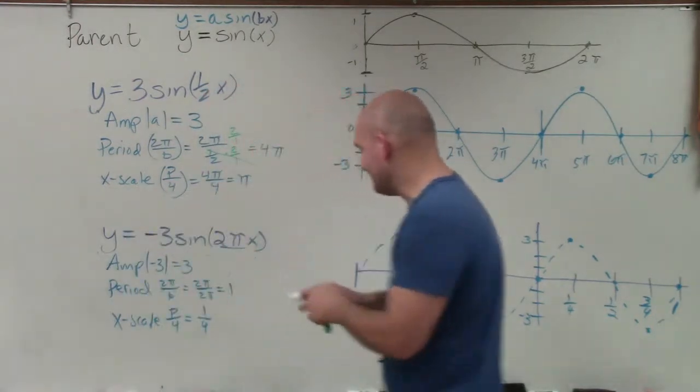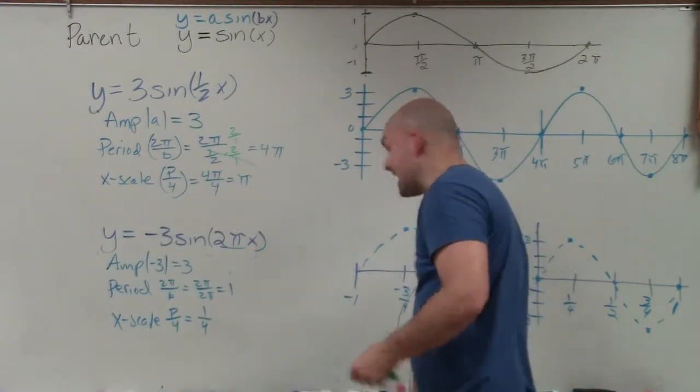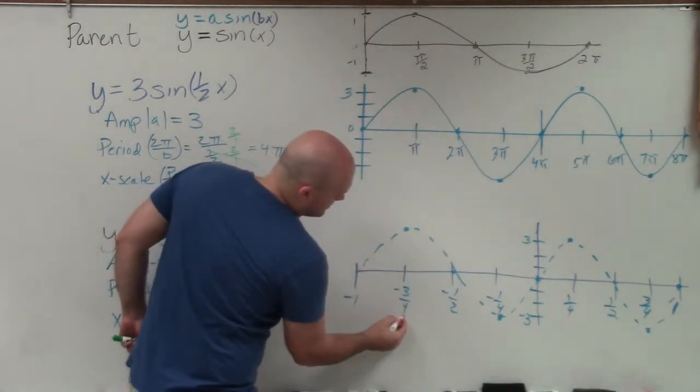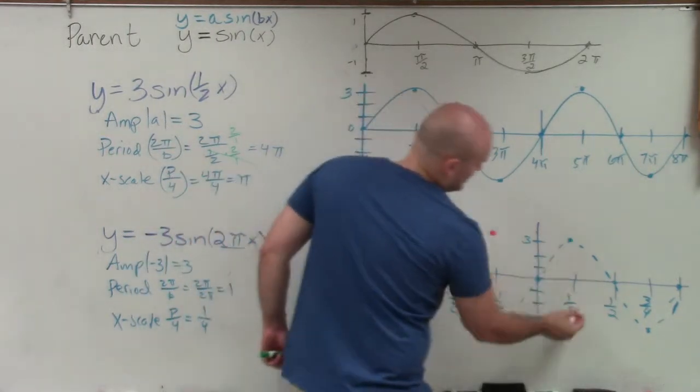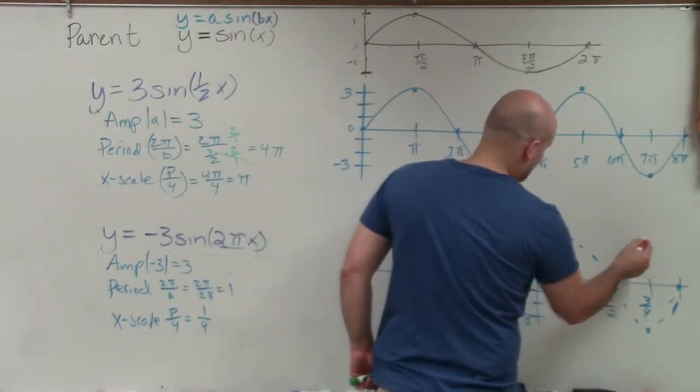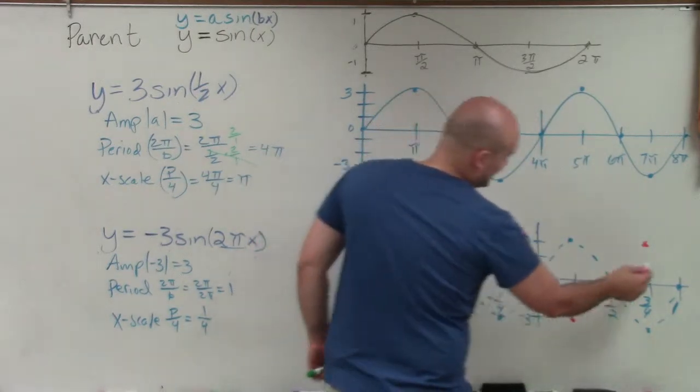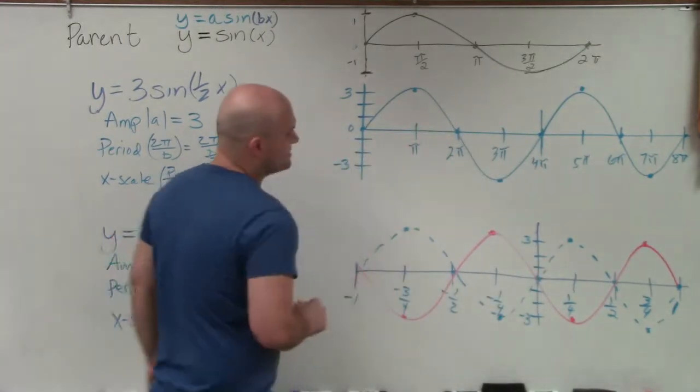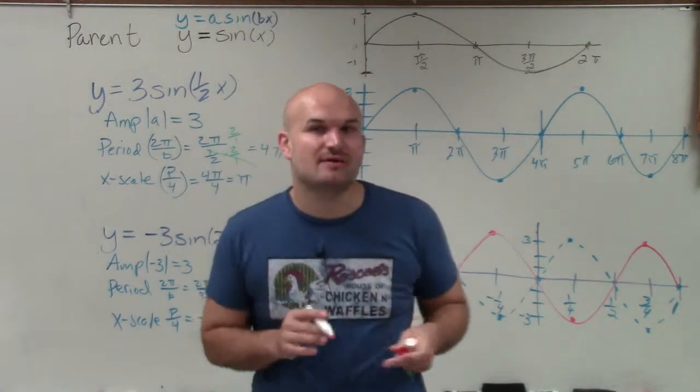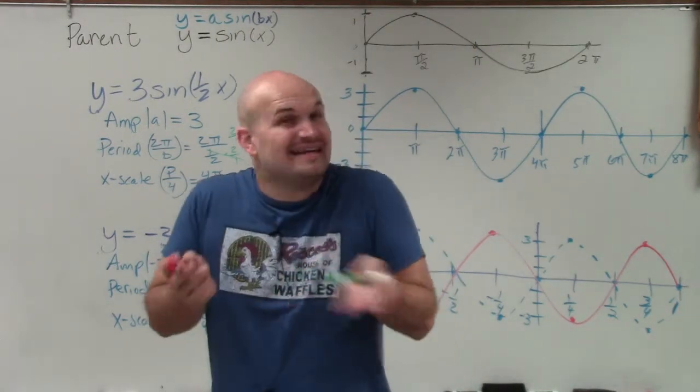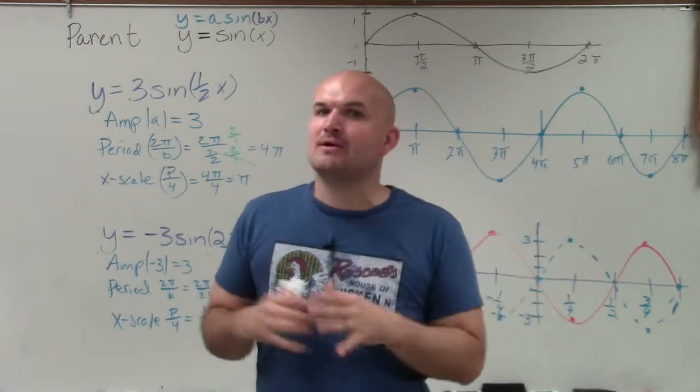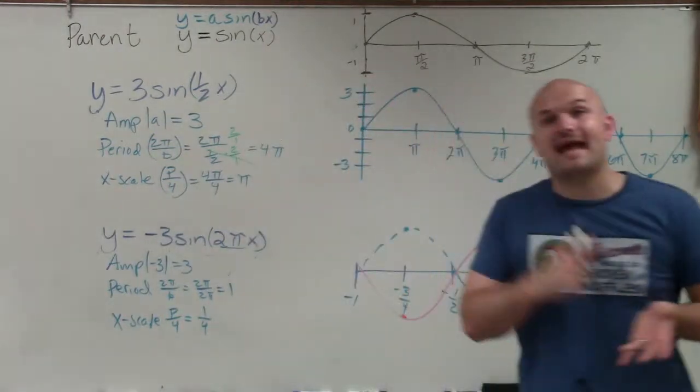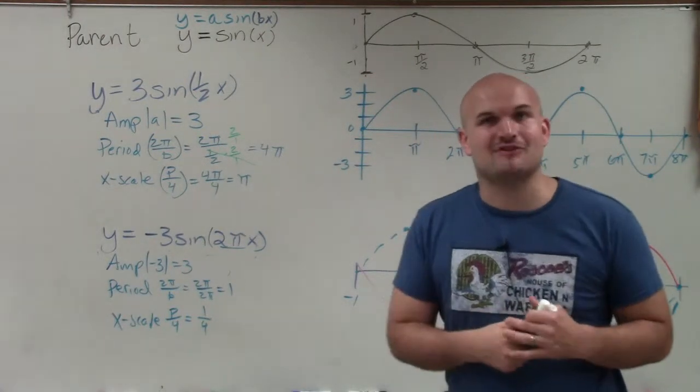But remember, we have that negative that we have to remind ourselves of. So then what that's telling us is every single point above or below is being reflected about the x-intercept. Now, all the points that are on the x-intercept cannot be reflected. But now what we can do here is now we can graph this all. And you can see now that is going to be the negative. So you just got to make sure that when you have a negative, make sure that the amplitude is not changed. However, the reflection will affect that. So there you go, ladies and gentlemen. That is how you determine the amplitude, period, and x scale to be able to graph your sine function. Thanks.